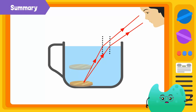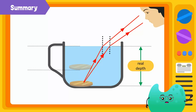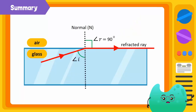The distance from the actual position of an object in a transparent medium like water to the surface of water is called real depth. The distance from the image of an object in a transparent medium like water to the surface of water is called apparent depth. An angle of incidence for which the angle of refraction is 90 degrees is called the critical angle.